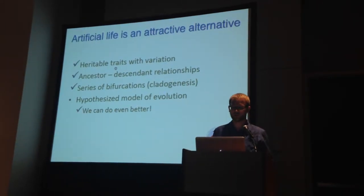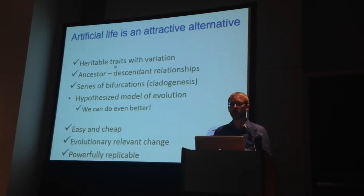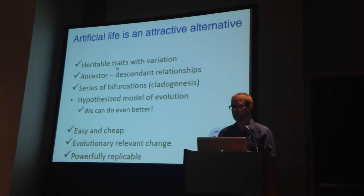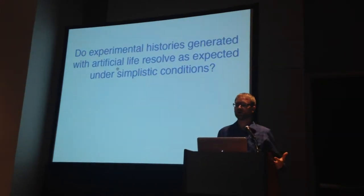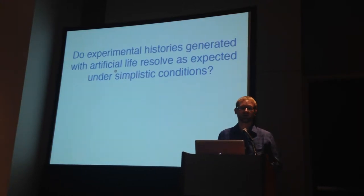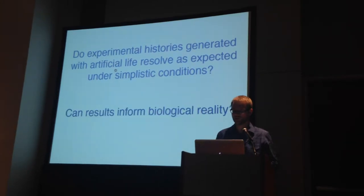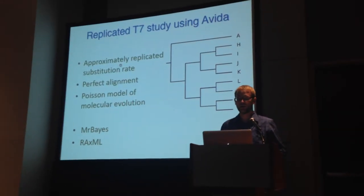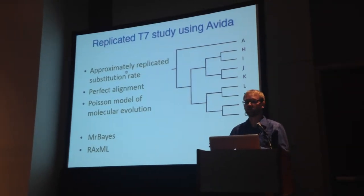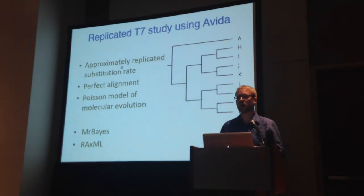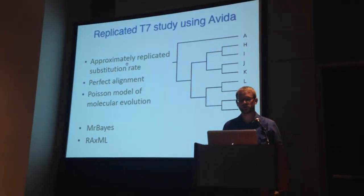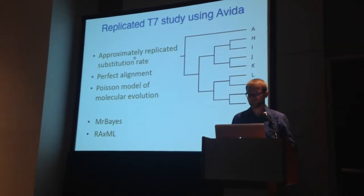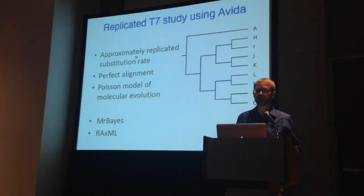So AVIDA meets all of the requirements for phylogenetics and deals with some of the feasibility issues involved with experimental phylogenetics. I think it's a nice trade-off between Todd Oakley's critiques on feasibility and biological realism. Our research questions are: do experimental histories generated with artificial life resolve as we would expect under simple conditions? Can we expand this to look at more complex situations? And ultimately, can these results inform biological reality? We replicated the T7 phage study, approximately replicating the substitution rate to get comparable branch lengths. We instituted a perfect alignment — no insertions or deletions — and used a Hasegawa–Kishino–Yano (HKY) model of molecular evolution. We also generated empirical models and used MrBayes and RAxML to construct inferred trees.